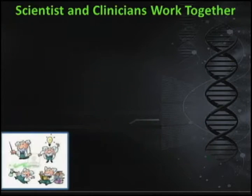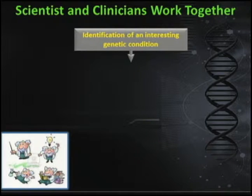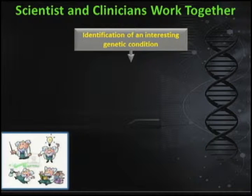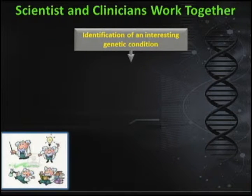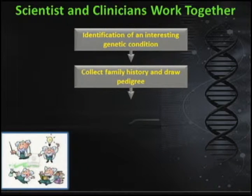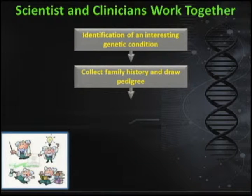To recap how scientists and clinicians work together: if approached by a clinician, the first thing we need to do is identify the area or genetic condition we're interested in and see why it's interesting. We discuss with clinicians why they think a case is interesting, how we can benefit from it, and how we can benefit the patient. We collect family history and draw a pedigree — and I emphasize pedigree here because it is a very important part of any genetic study.